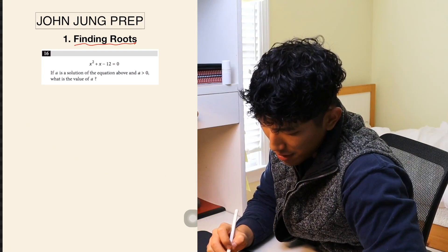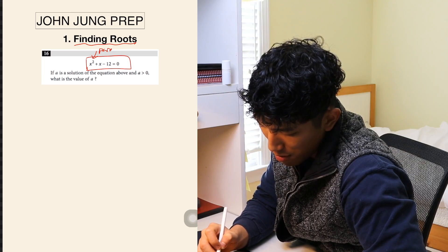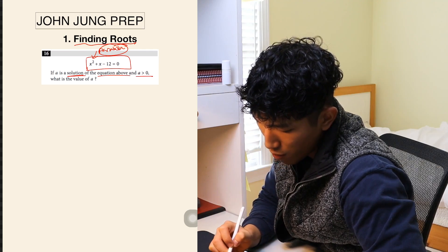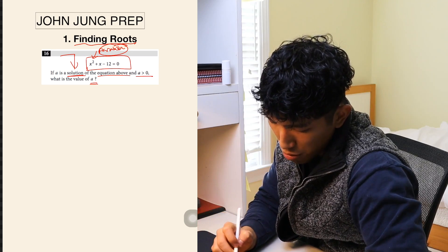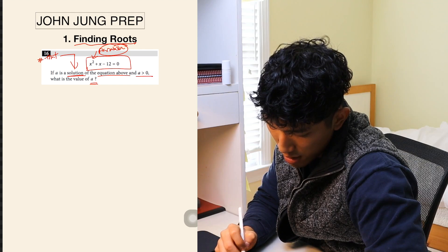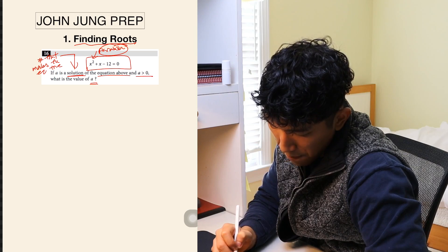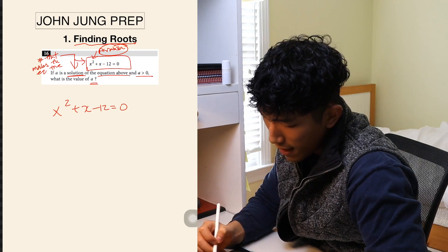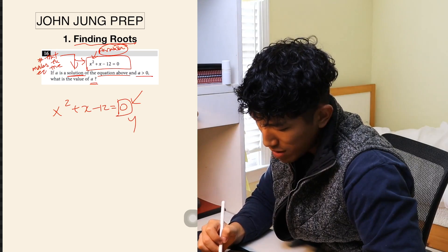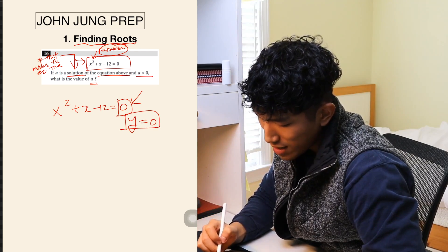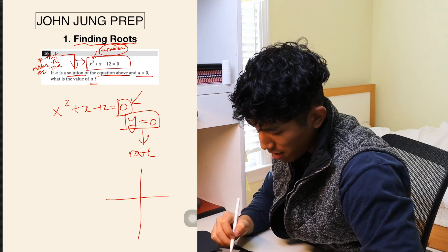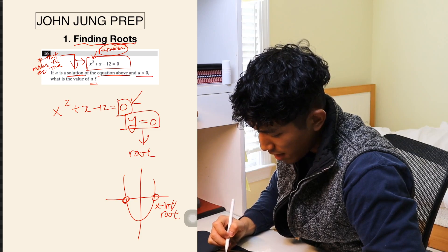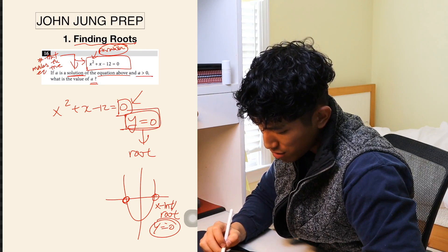The first type is finding a root. Looking at an equation like x² + x − 12 = 0, you see the exponent of 2 — that tells you it's a parabola question. The question asks: if a is a solution of the equation and a is greater than zero, what is the value of a? A solution is the number that makes the equation true. Since the equation is set equal to zero, y equals zero, which means you are looking for the root.